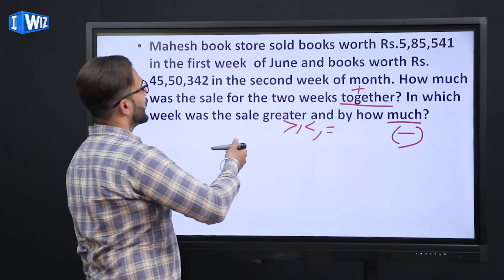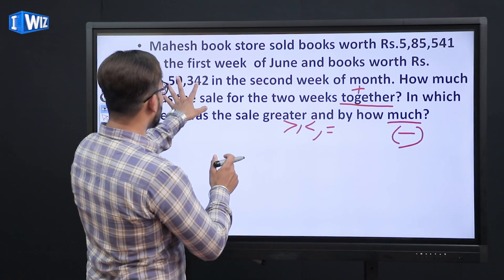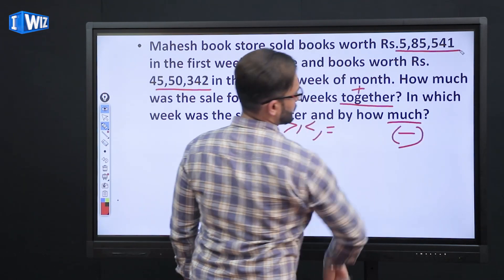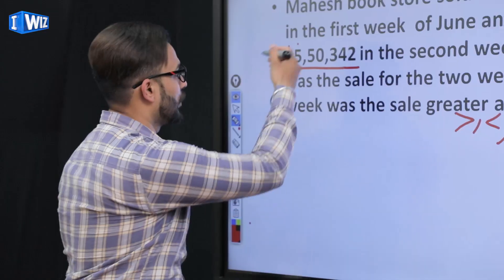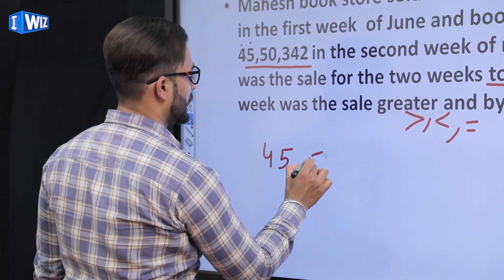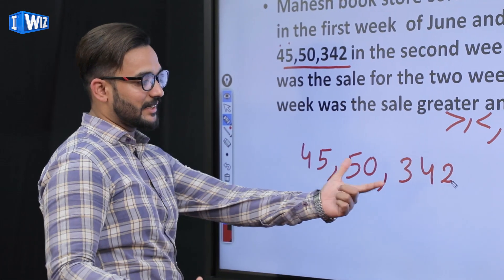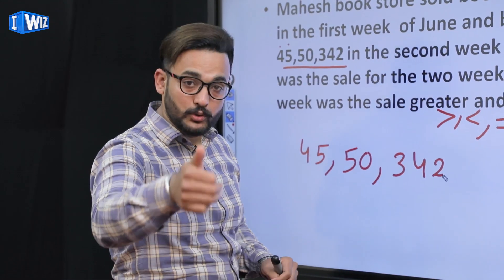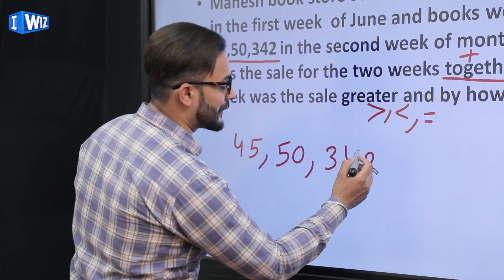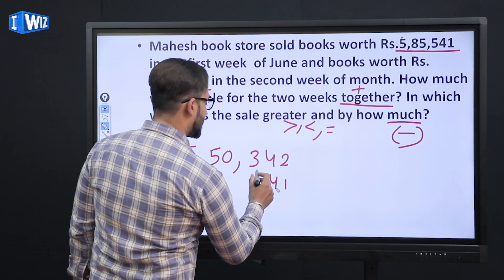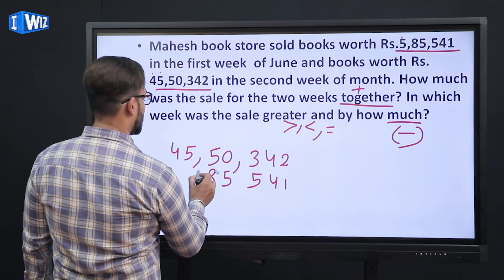So, how much was the sale together for the two weeks — we need to add. We will use the column method. First, let's compare to find the bigger number: the lakh position has one digit in one number and two digits in the other, so obviously the second is bigger. We write it first: 45,50,342. Then place ones under ones, tens under tens, hundreds under hundreds, thousands, ten-thousands, and lakhs. This is called the column method of addition.